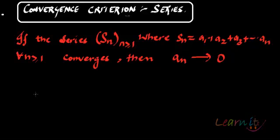Which says that if you have a series Sn, n greater than or equal to 1, where Sn essentially is the nth term, so it is A1 plus A2 plus A3, so on and so forth, till An - the sum of the first n terms.